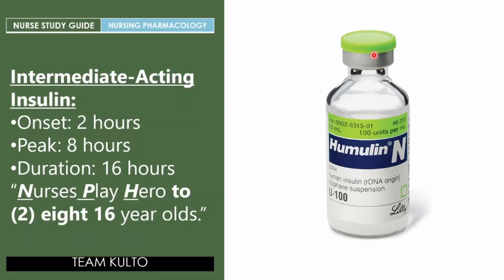For intermediate-acting insulin — NPH: onset is two hours post-administration, peak is eight hours upon administration, and duration is 16 hours. To remember this, use the phrase: 'Nurses play hero — NPH — to eight 16-year-olds.' Two is your two-hour onset, eight is your eight-hour peak, and 16 is your 16-hour duration, meaning how long it stays in the patient's body.